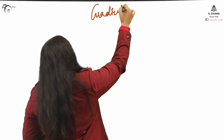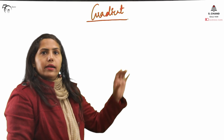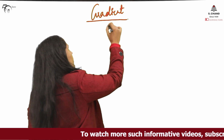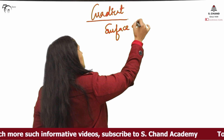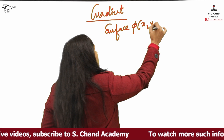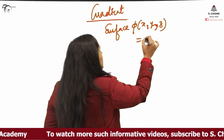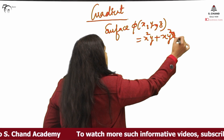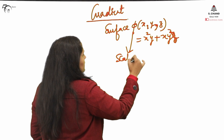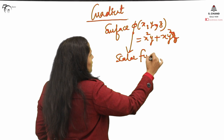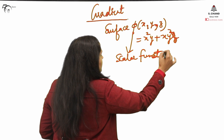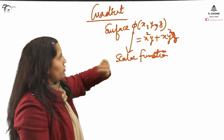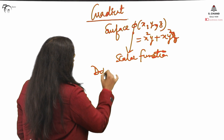First I'll discuss the gradient part, then after understanding gradient we'll come to normal line and tangent plane. What exactly does gradient mean? This time we'll talk about a surface — suppose this surface is phi, and phi will be a scalar function. For gradient we need a scalar function, which we also call a surface. So the definition of gradient is: